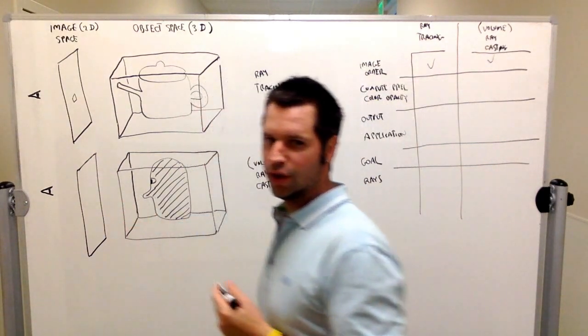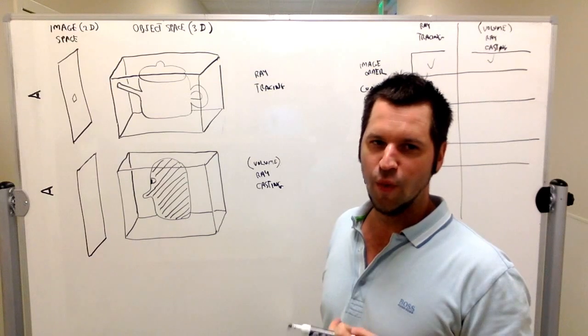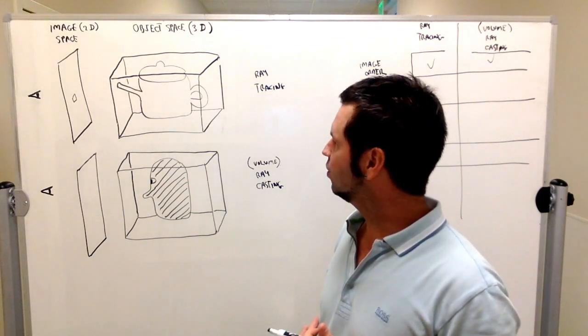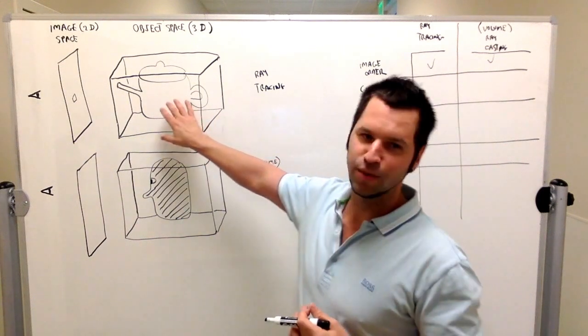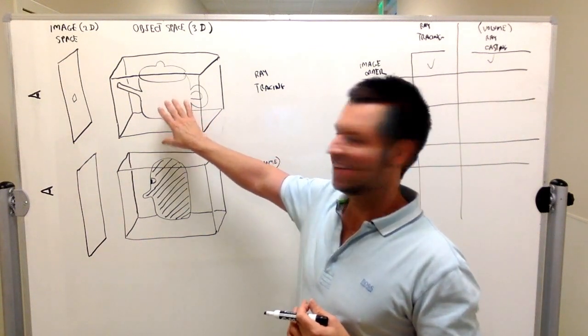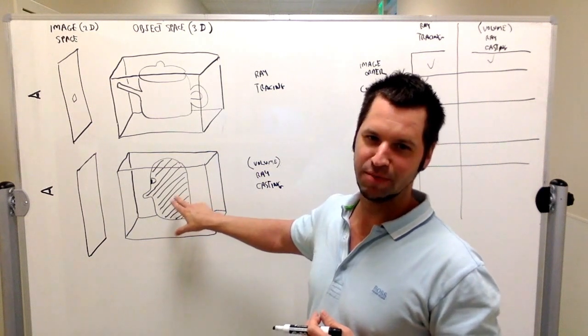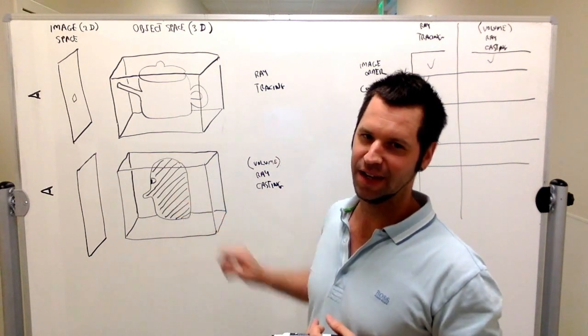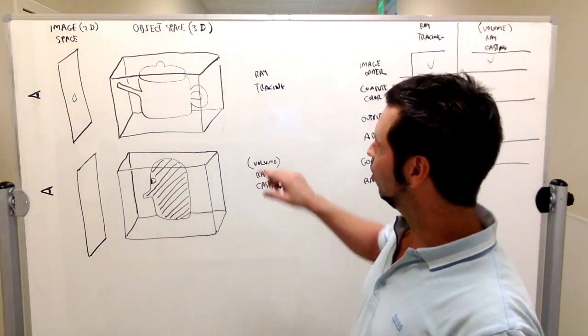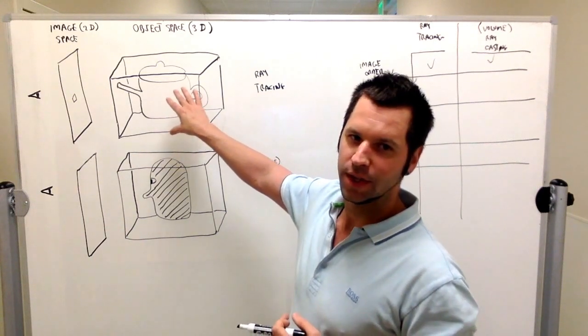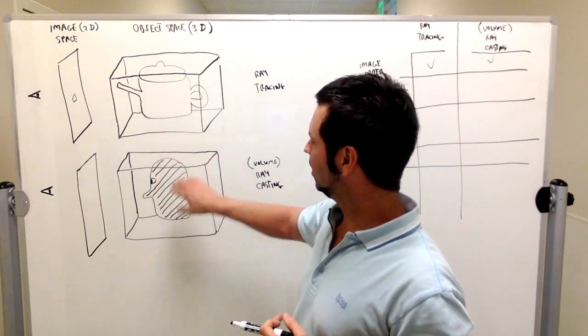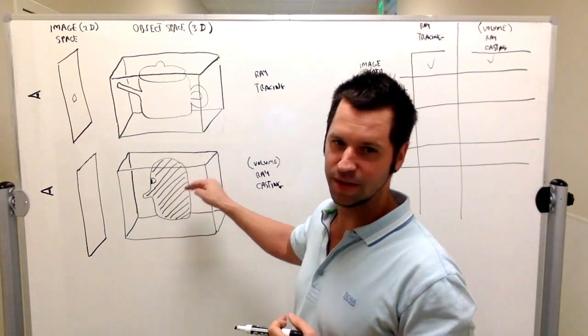I'm going to draw one ray from a ray traced scene. These are two scenes. This is supposed to be a teapot, and that's supposed to be a person's head. You'll notice the teapot has no fill—it's a surface only—and this person's head is filled.